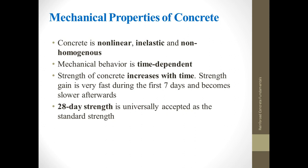This leads to the third material property of concrete: concrete shows non-homogeneous behavior. When you pour concrete on site, it is impossible to obtain a homogeneous mix. Therefore, concrete's strength is non-homogeneous and there might be points where its strength is higher than at other points, or vice versa.